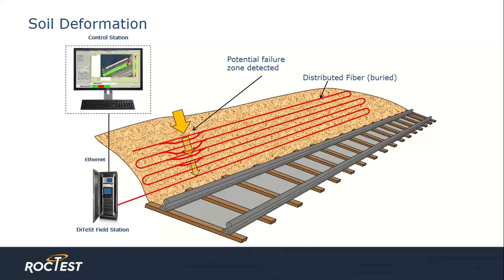In this example, we're looking at soil deformation in a slope adjacent to a rail line. The fiber would be buried in the embankment as a retrofit or new construction. You can see the sloughing of the distributed fiber on the left, which would be reflected as strain changes. Once changes move beyond the threshold set by the client, warning messages would be immediately sent to all key personnel, allowing for corrective measures. The installation covers the entire slope, allowing for precise location of problem zones.